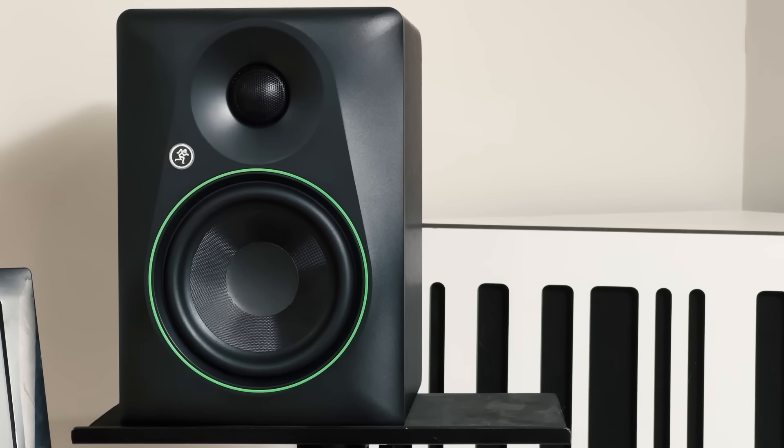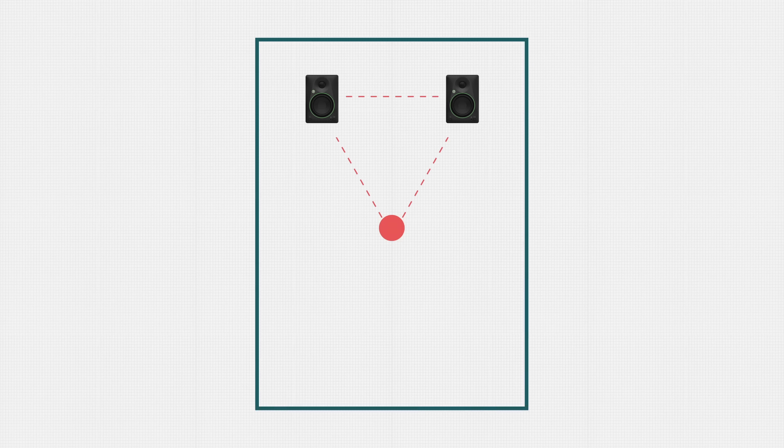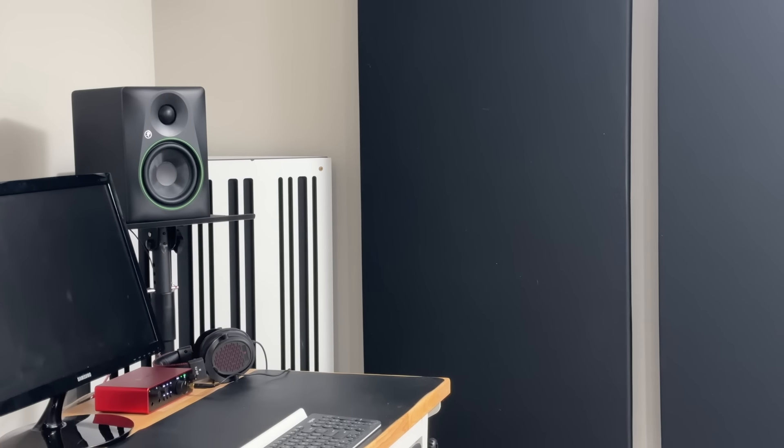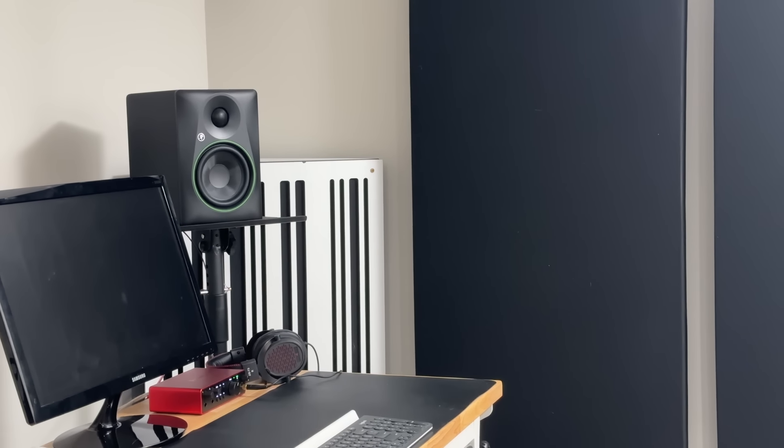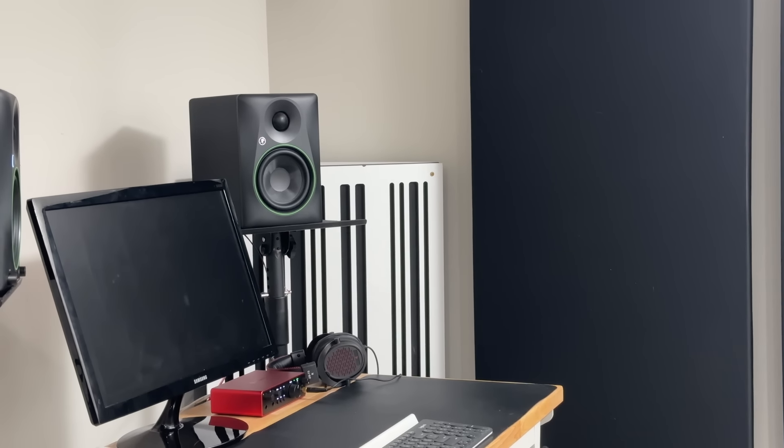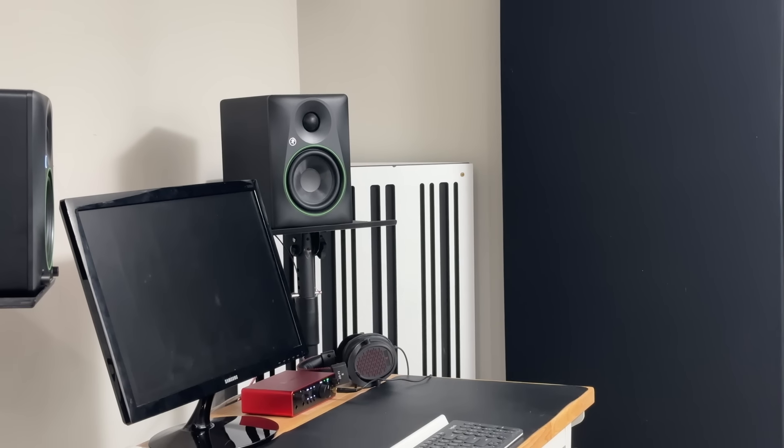You can place them on monitor stands to bring the tweeters up to ear level, or angle the speakers upward or downward so the tweeters point toward your ears. A final placement tip is to aim for an equilateral triangle between each monitor and the listening position, where the distance between the listener and each monitor is equal to the distance between the monitors. This not only optimizes the stereo image to be wide enough without being too wide, but also ensures that each monitor is equally spaced from the listening position — which is very important, as unequal distances can cause stereo image distortion and phase interference.